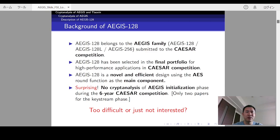First, I will briefly introduce the background of AEGIS-128. It belongs to the AEGIS family submitted to the CAESAR competition. In the AEGIS family, there are AEGIS-128, AEGIS-128-L, and AEGIS-256.